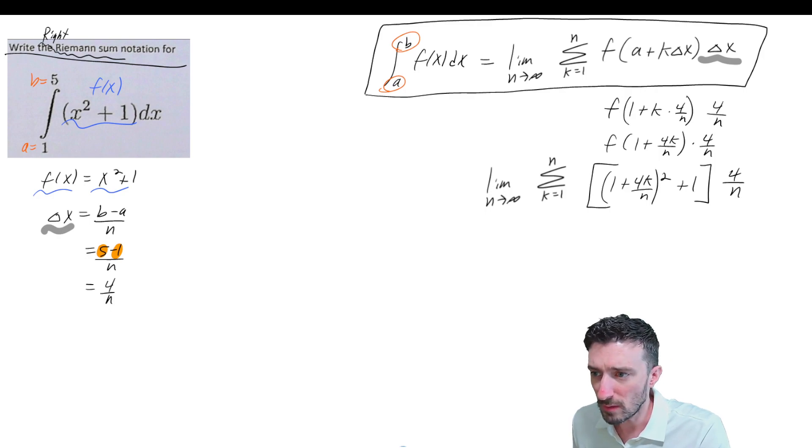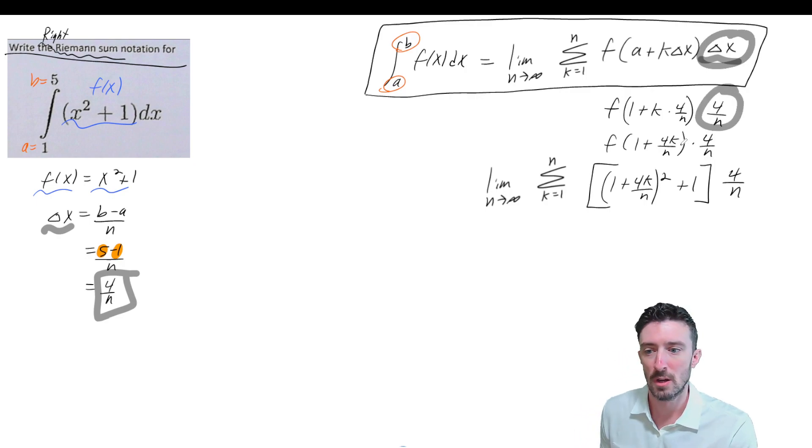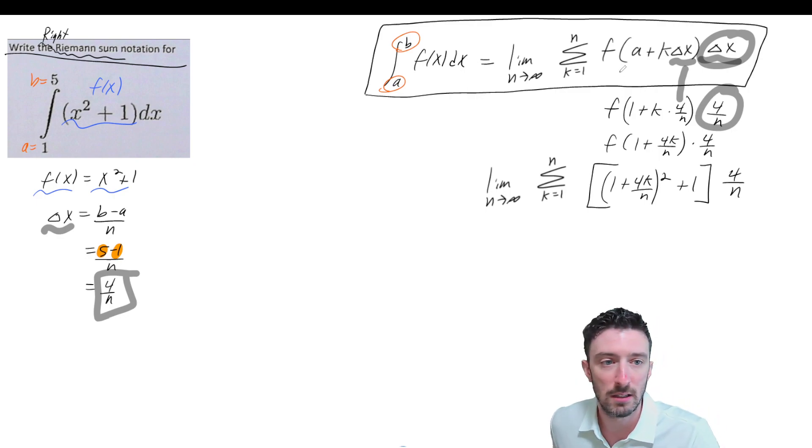The next thing that I plugged in was where I saw Delta X showing up again right there, and I also plugged in the a, the a is 1, but now I keep the k.